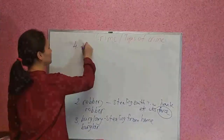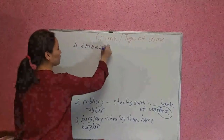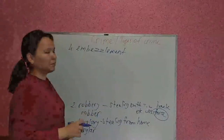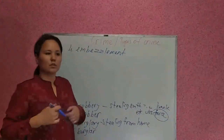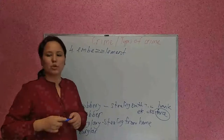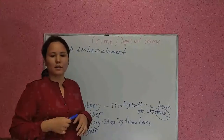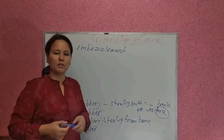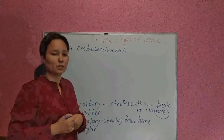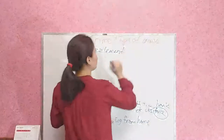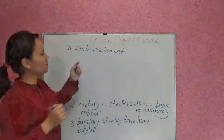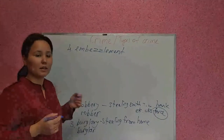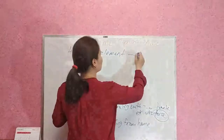Number four is embezzlement. Embezzlement is when you are trusted to keep some money — someone's money — and you steal it illegally. This is stealing money you are trusted with. A person who commits embezzlement is called an embezzler.